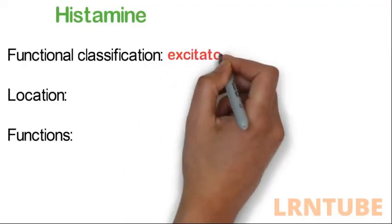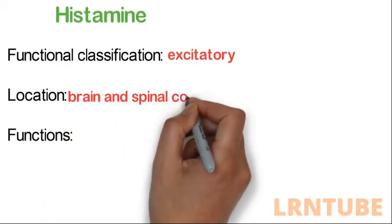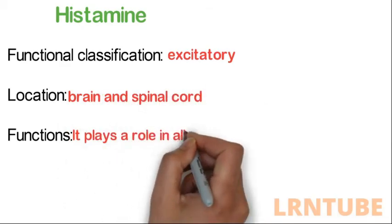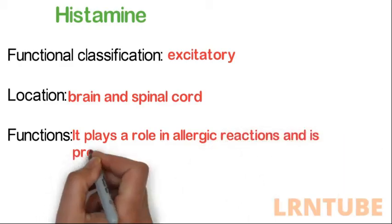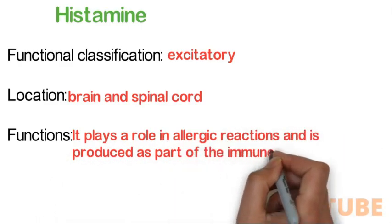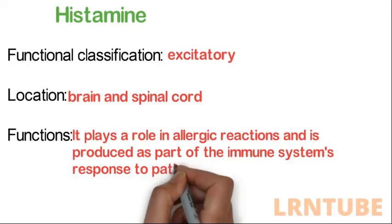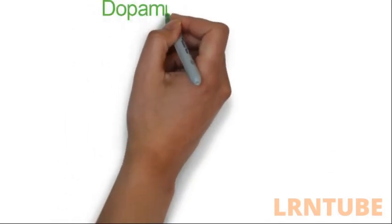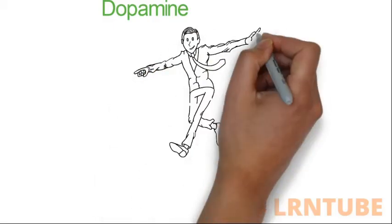Histamine is classified as an excitatory neurotransmitter located in the brain and spinal cord. It plays a role in allergic reactions and is produced as part of the immune system's response to pathogens.